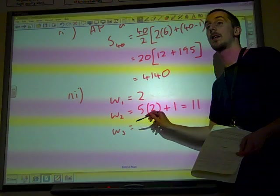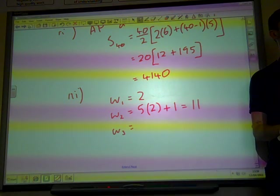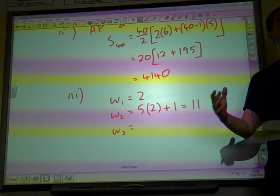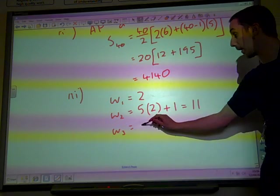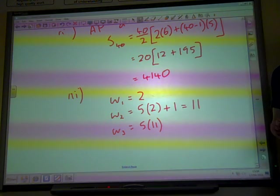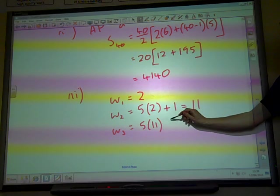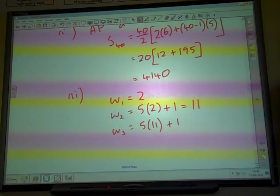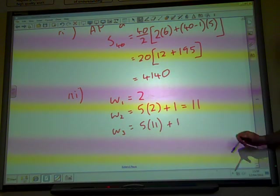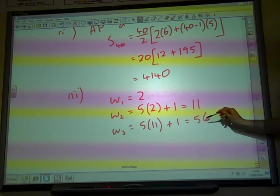W3, under this new rule, is 5 times the previous term plus 1. So 5 times the previous term plus 1. So this term we've got 56.